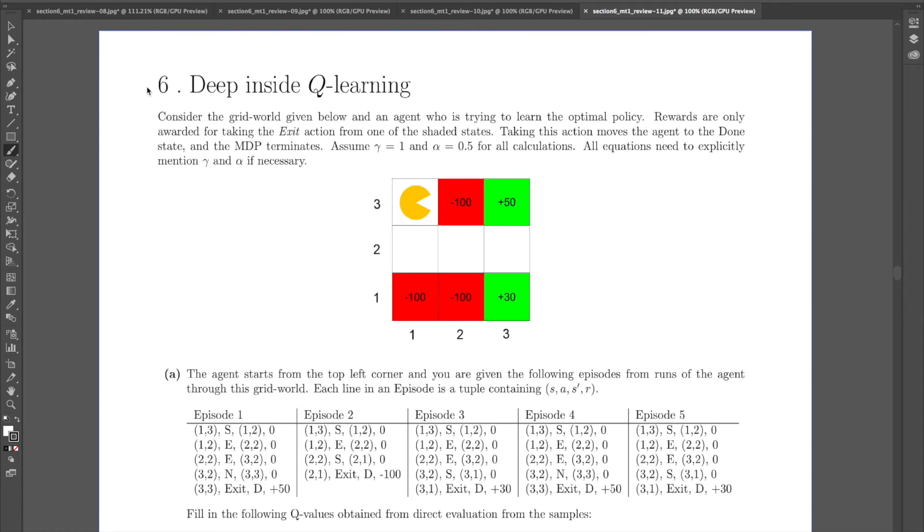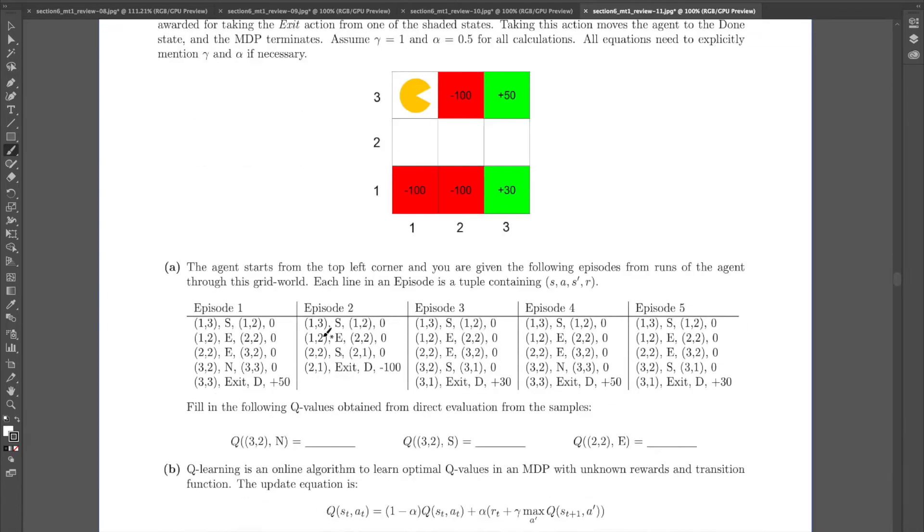Okay, let's get started with question 6, which is also a question about Q-Learning. In this case, this is a picture of the MDP that we have, and these are the various observations that we observe, grouped by episode. So each of these corresponds to one trajectory of Pac-Man through this grid world, and you can see that all the transition rewards are zero except for the exit transition for all of these episodes.